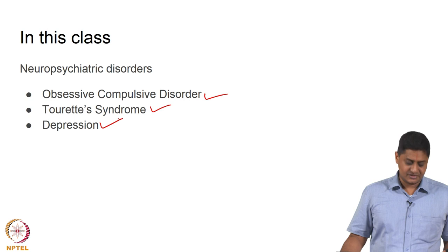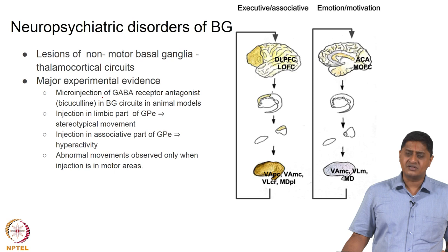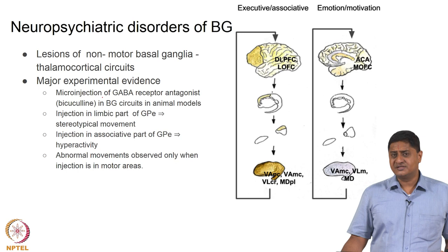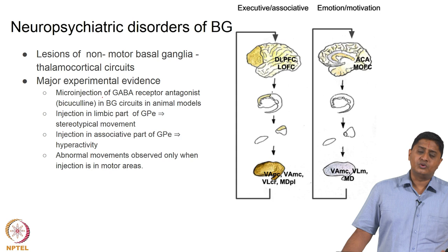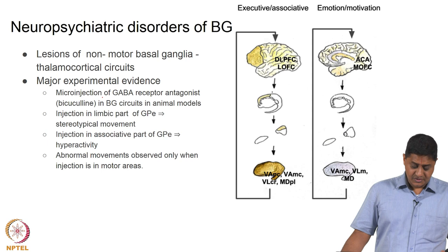The essential question is how does Basal Ganglia dysfunction possibly cause these disorders. Let us remember that we discussed four independent loops of Basal Ganglia: the skeletomotor loop, the oculomotor loop, the limbic loop, and the executive or associative loop.